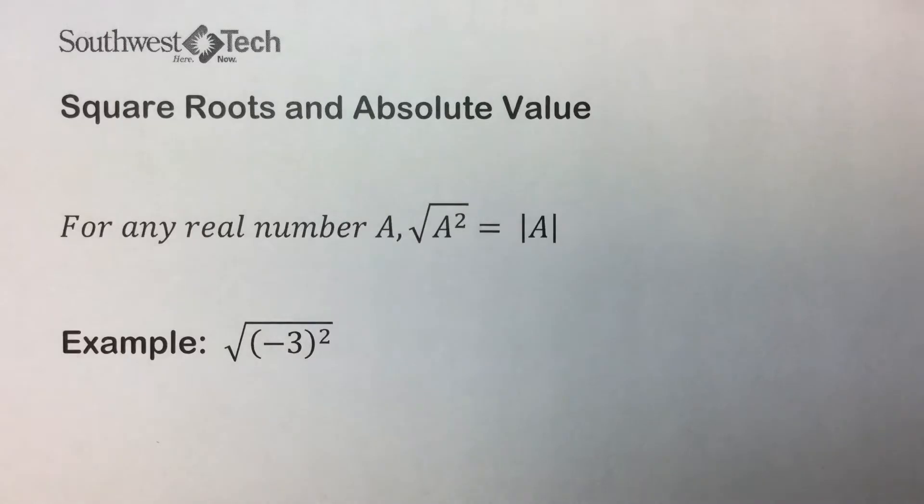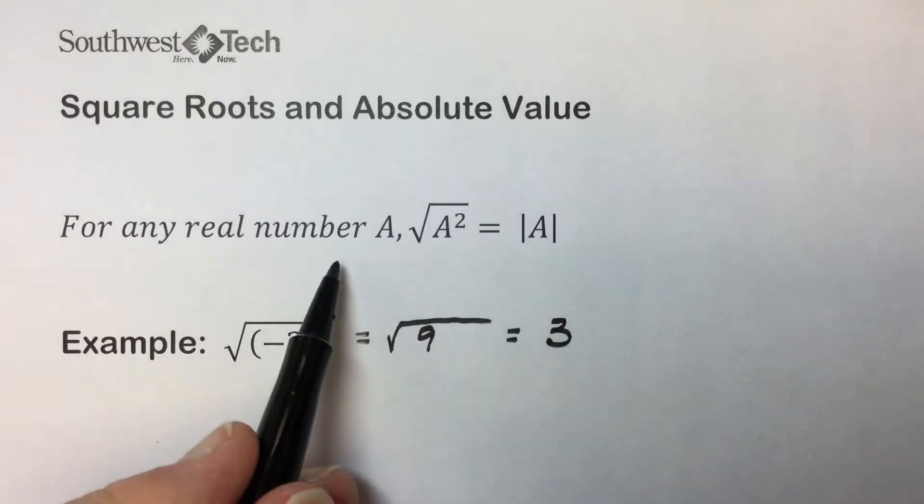Let's take a look at an example that illustrates this relationship. If we simplify the radicand in this radical expression, negative 3 squared results in a positive 9, and the principal square root of 9 is 3.